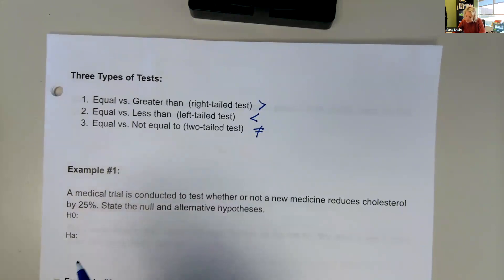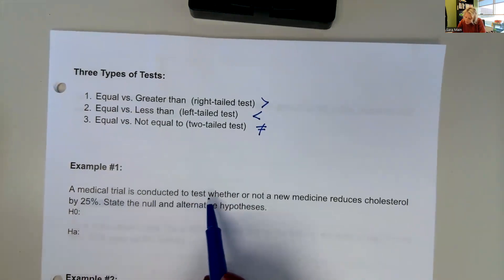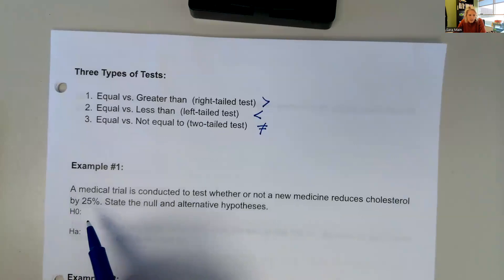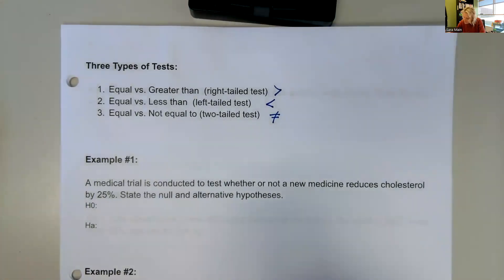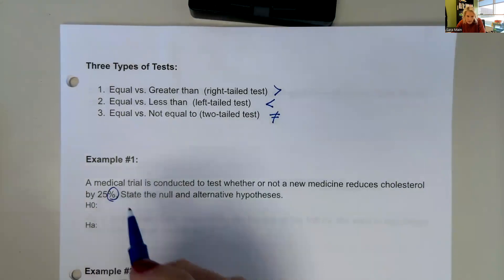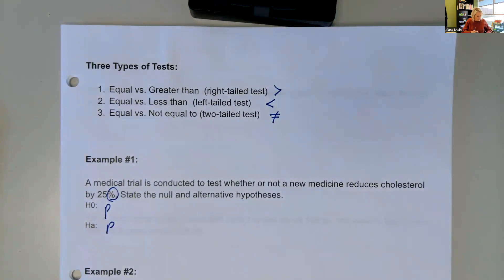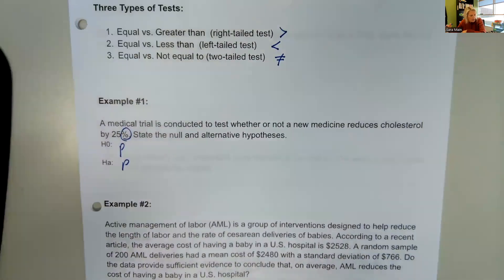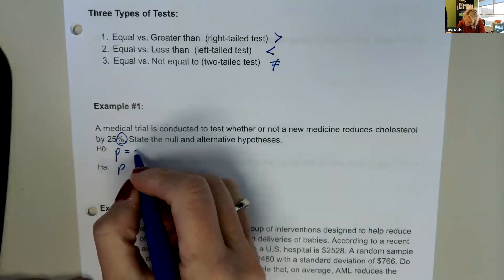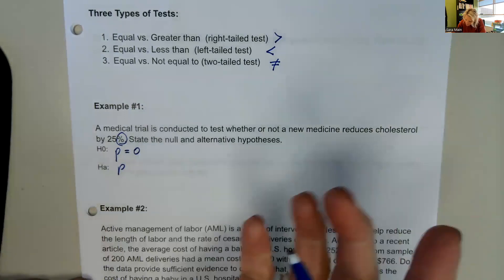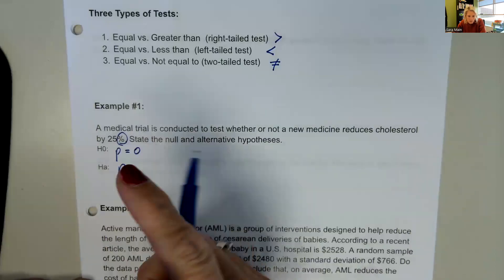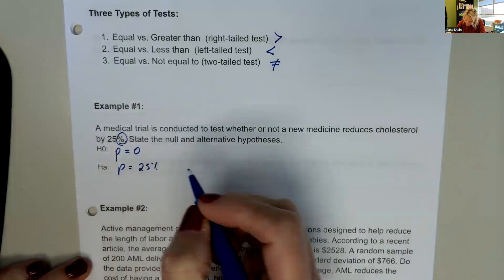Example one: a medical trial is conducted to test whether or not a new medicine reduces cholesterol by 25%. State the null and alternative hypotheses. For H0, we know we're testing proportions because we were given a percentage. We're assuming there's no change with the medicine, so the proportion equals zero. But the trial says the medicine reduces cholesterol by 25%, so H_A is that there's a 25% change.